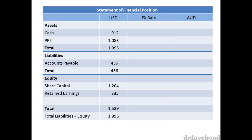For the statement of financial position, assets and liabilities use the closing rate. For equities, in a sense it doesn't matter because assets and liabilities are already defined using the closing rate, and as such the total amount of equity is also defined — this is just the accounting equation at work. But we still have line items to deal with. The general convention is that share capital is converted using the opening rate, whilst retained earnings is taken from the translated statement of comprehensive income.